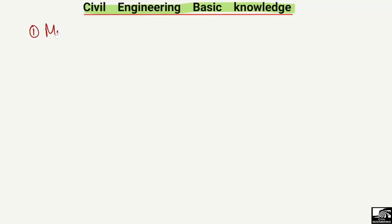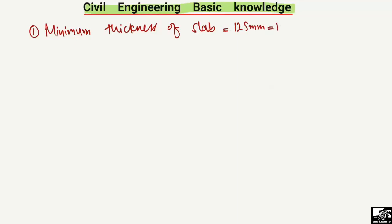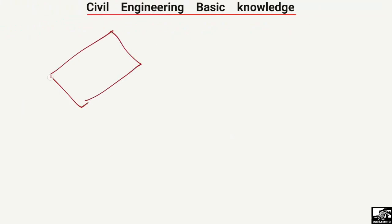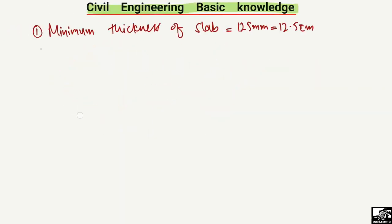The first point is that the minimum thickness of a slab should be equal to 125 millimeters, or 12.5 centimeters. If I draw it in 3D, this is my slab element, and its minimum thickness should be equal to 125 millimeters or 12.5 centimeters.